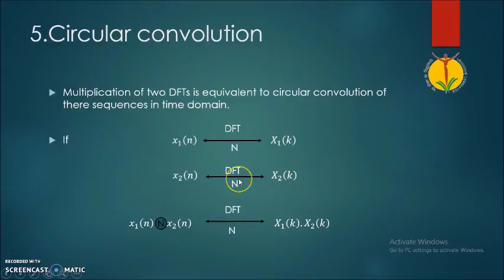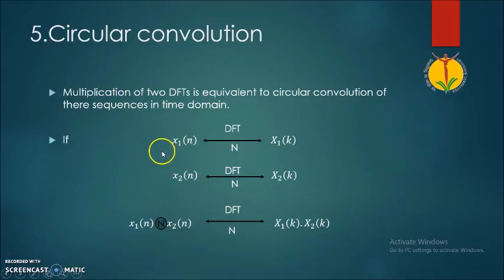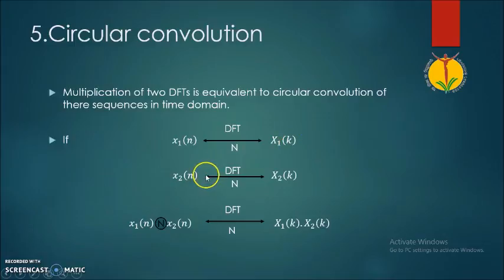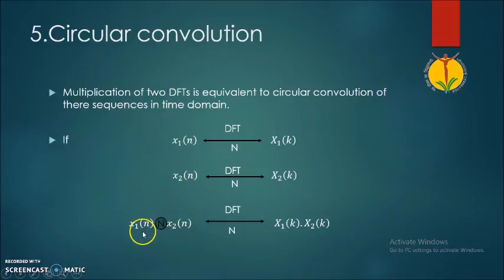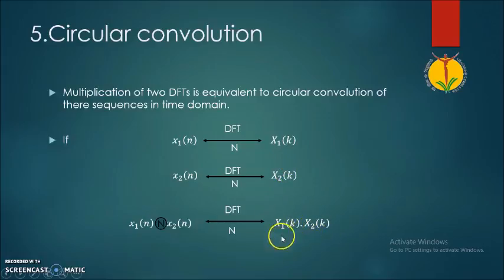The fifth property is circular convolution, which is one of the most important properties used for the calculation of DFT multiplications. If x1(n) has N-point DFT X1(k) and x2(n) has N-point DFT X2(k), then the circular convolution of these two sequences in the time domain corresponds to the multiplication of their individual DFTs, X1(k)·X2(k), in the frequency domain.